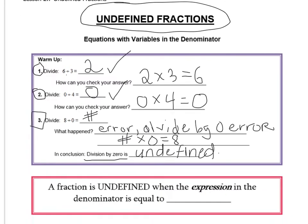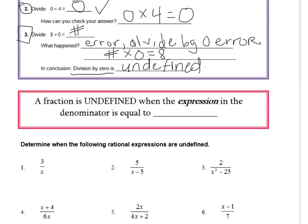The types of questions they ask on a Regents exam are typically multiple choice. For example, directions may say 'determine when the following rational expressions are undefined,' or 'for what value of x will this fraction be undefined?' In other words, you're looking for the value of x that will make the bottom equal to 0. It doesn't matter what's in the numerator. You're trying to make the bottom of the fraction equal 0 in order for the fraction to be undefined. A fraction is undefined when the expression in the denominator is equal to 0.